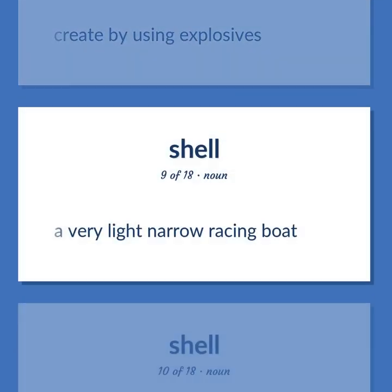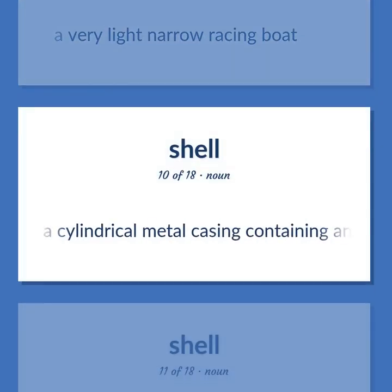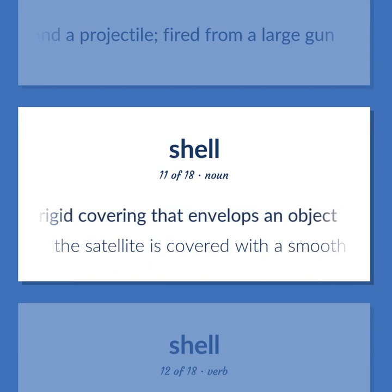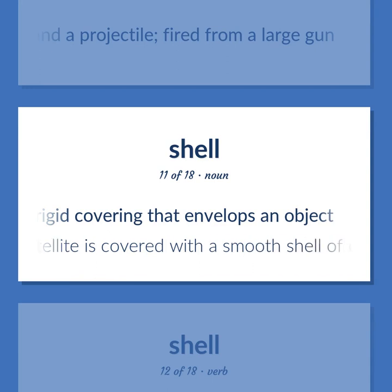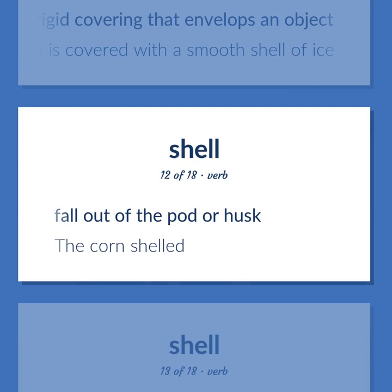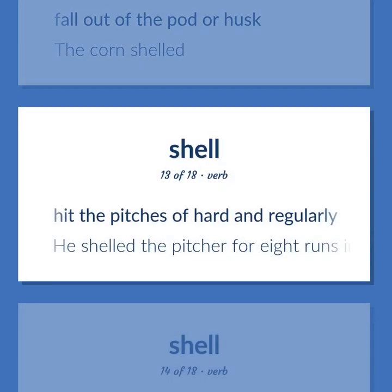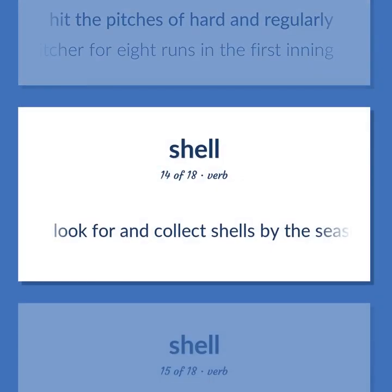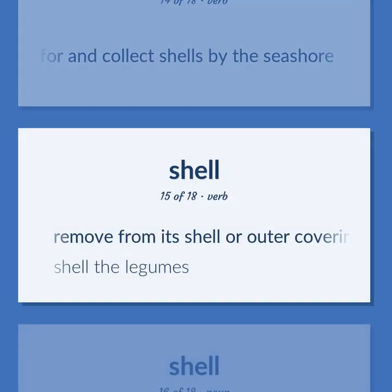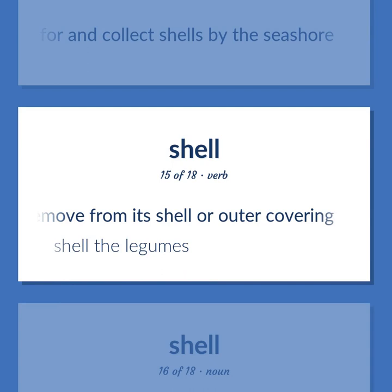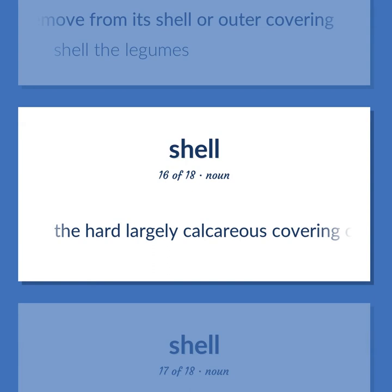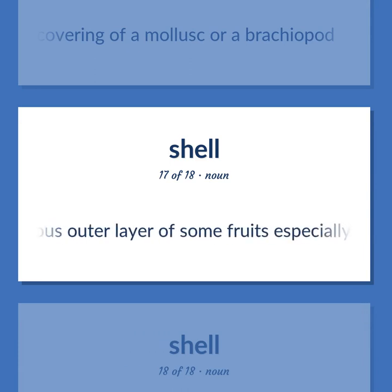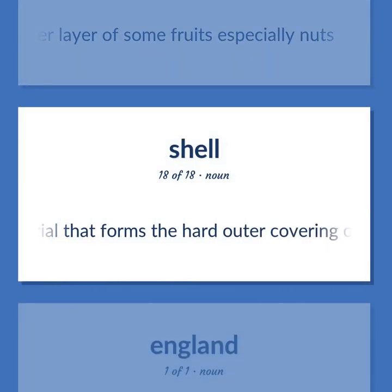Shell: A very light narrow racing boat. Ammunition consisting of a cylindrical metal casing containing an explosive charge and a projectile, fired from a large gun. A rigid covering that envelops an object — e.g., the satellite is covered with a smooth shell of ice. To fall out of the pot or husk — the corn shells. To hit the pitches of hard and regularly — e.g., he shelled the pitcher for eight runs in the first inning. To look for and collect shells by the seashore. To remove from its shell or outer covering — shell the legumes. The hard largely calcareous covering of a mollusk or a brachiopod. The hard usually fibrous outer layer of some fruits, especially nuts. The material that forms the hard outer covering of many animals.